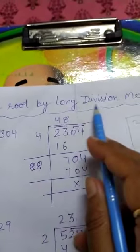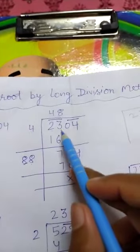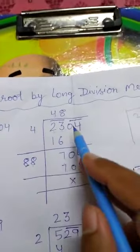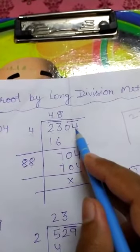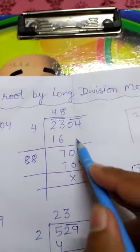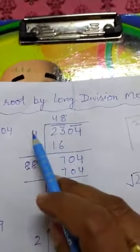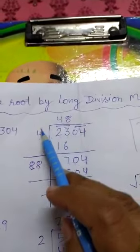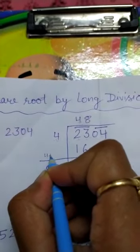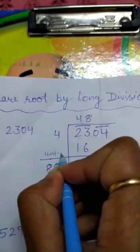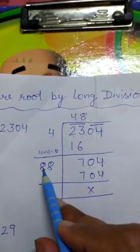Similar to long division, we get 7. Next, we do not take one digit — we take one full pair. So 04 comes down to give us 704. Now we add: 4 plus 4 equals 8. We write 8 here.